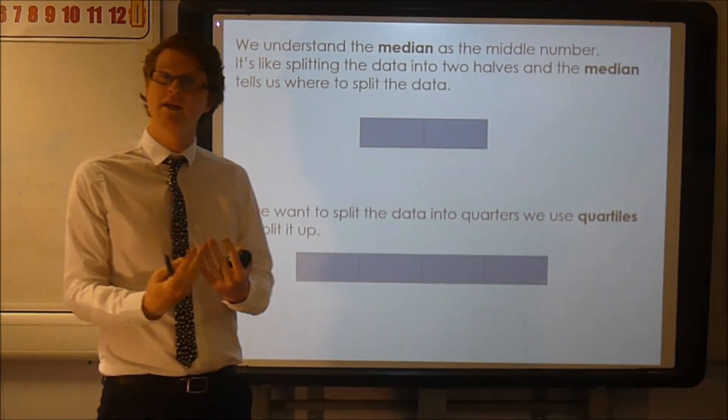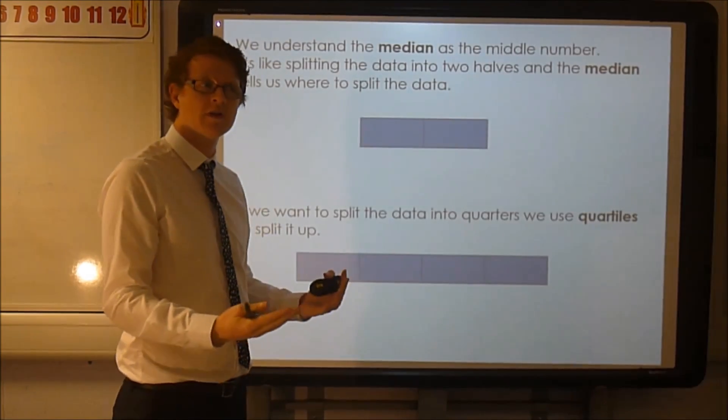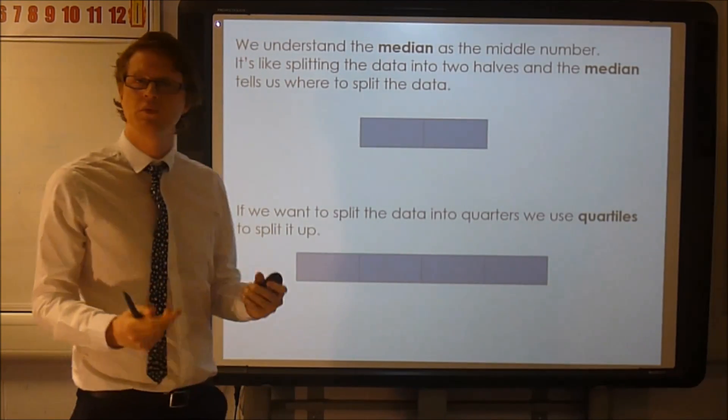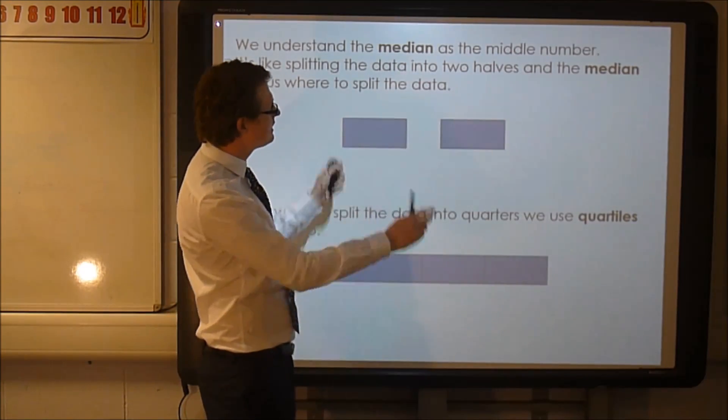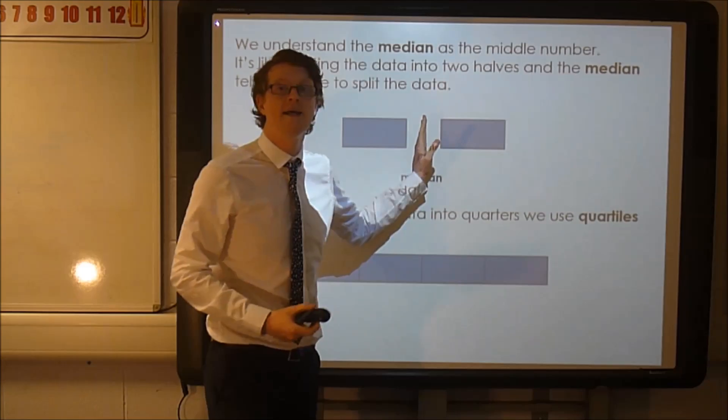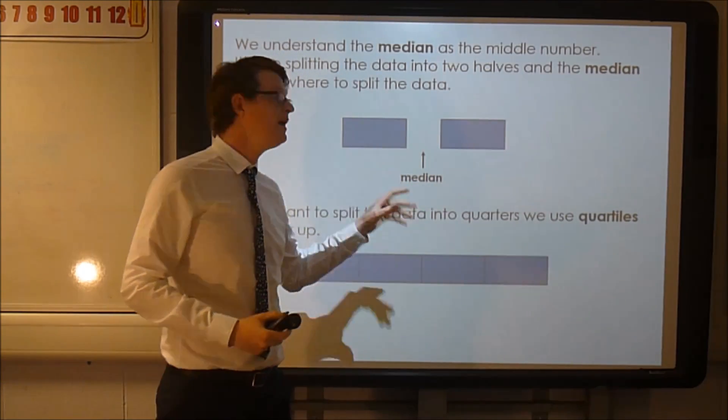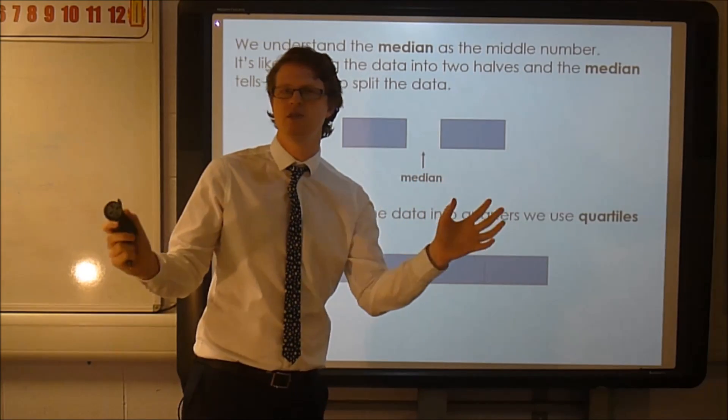You might be familiar with what the median is. We usually go for median's middle number when we first encounter it. But actually, it's what's going to split the data into two pieces. So if we've got all our data and we split it into two pieces, the median's in between them. It might be an actual value in the data set or it could even be in between a couple of values. But it's the number that splits it up into two sections.